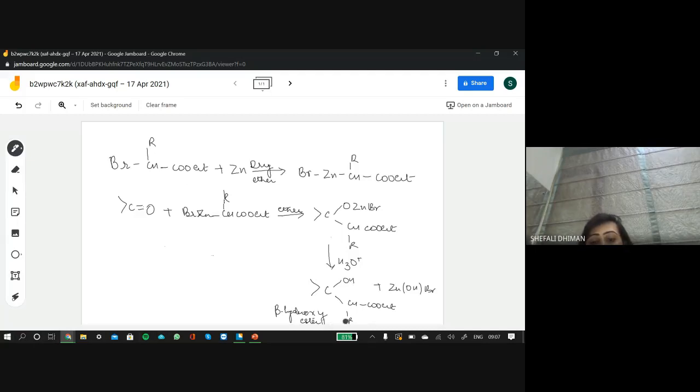And then you get this intermediate, which is called as the beta-hydroxy ester. It is a very clear-cut, simple method, which is used to prepare beta-hydroxy ester in just two steps using organo-zinc compound.